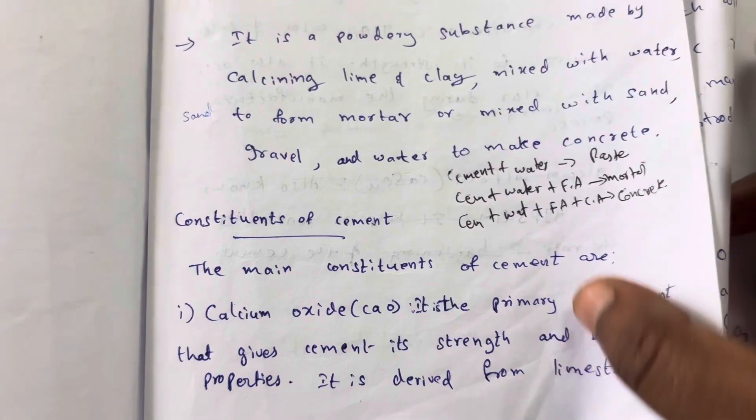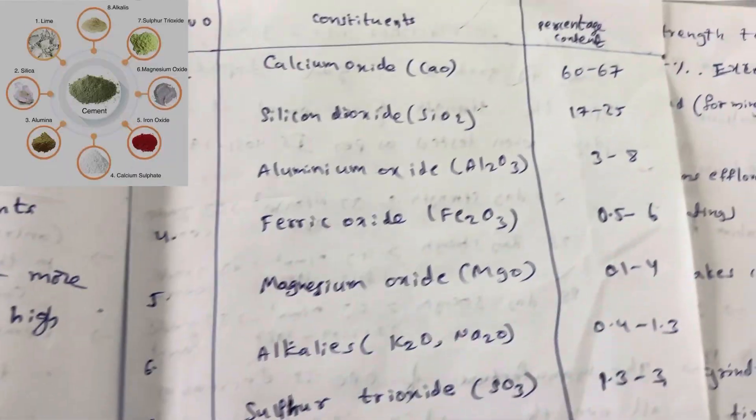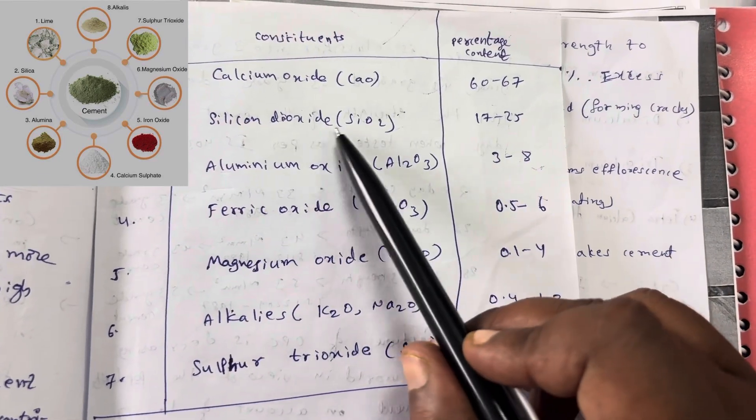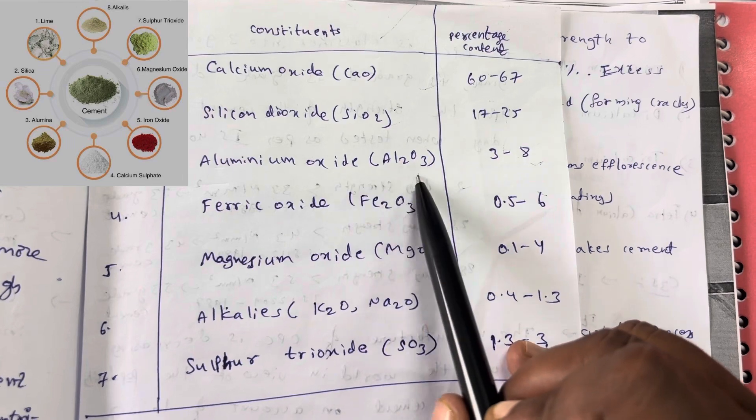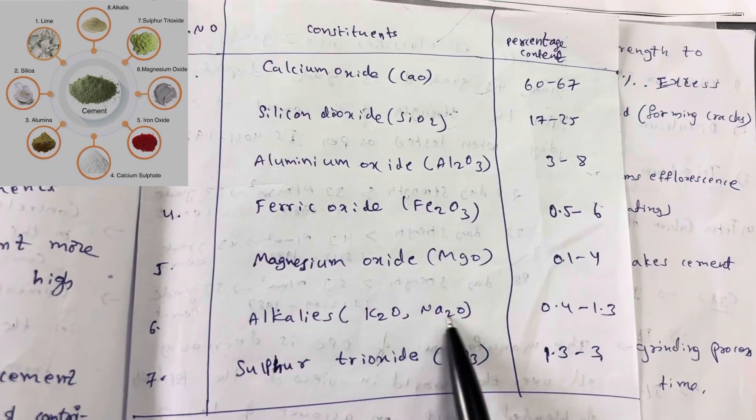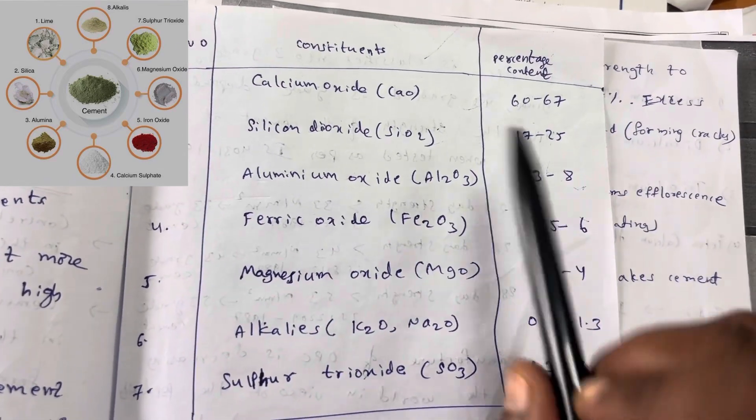Let us see the constituents of cement. These are the constituents: calcium oxide CaO, silicon dioxide SiO2, aluminum oxide Al2O3, ferric oxide Fe2O3, magnesium oxide MgO, alkalis K2O and Na2O, and sulphur trioxide SO3.